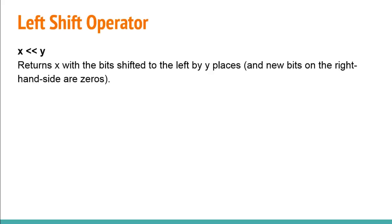First up, we have the left shift operator. Its symbol is two left arrows (<<), and it returns x with the bits shifted to the left by y places.